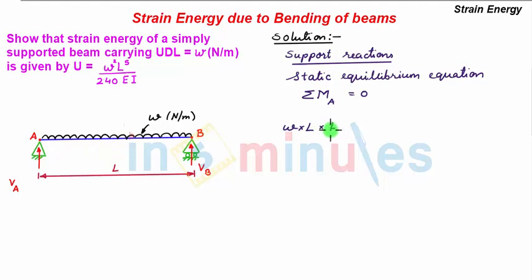Also we have this anti-clockwise moment caused due to this upward vertical support reaction Vb acting at a distance of L from point A. So we have minus Vb times L and summation of this whole moment is equal to 0.